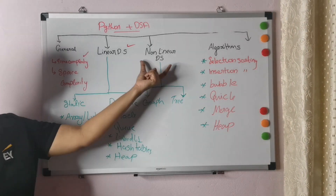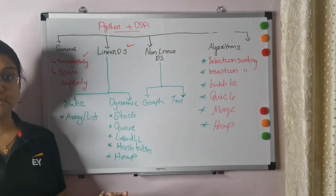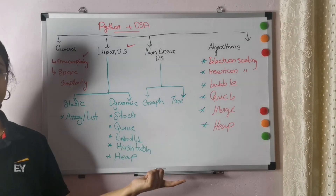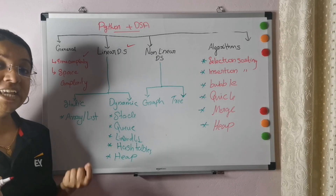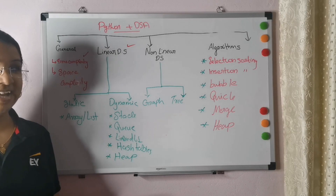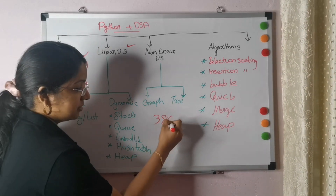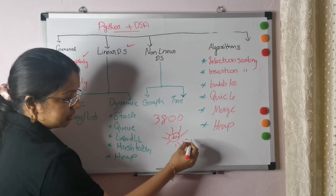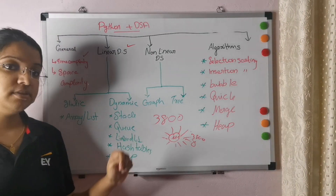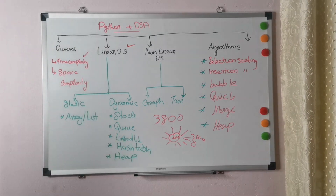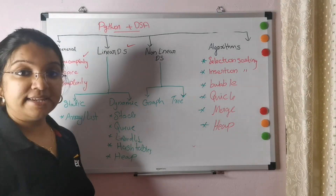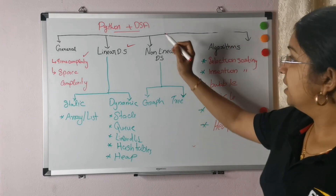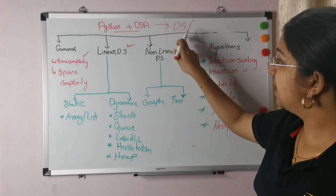Moving forward, the third category is Non-Linear Data Structures, which is very important for non-relational databases and large-scale data platforms. We definitely want to understand graph structures and tree structures. For example, with graphs you can think of Facebook — how many connections are available. If I am a node and I have 380 connections, that is a graph situation. Trees are used for things like binary search.